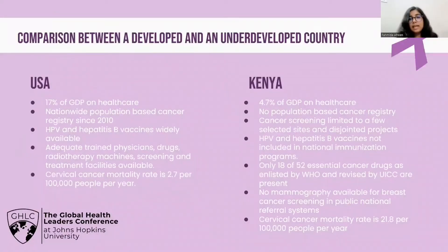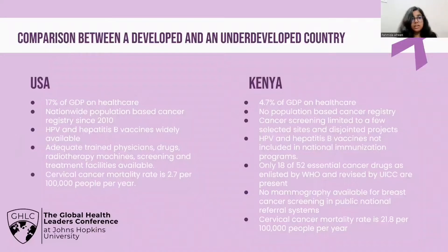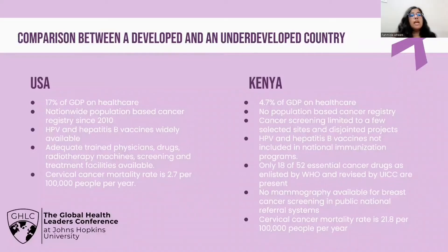Let's compare the USA and Kenya in terms of their cancer care services. The USA spends 17 percent of its GDP on health care. It has had a national population-based cancer registry which contains data about cancer prevalence, mortality, common cancer types, and causes. Vaccines such as the human papillomavirus or HPV vaccine and hepatitis B vaccines are much more widely available in the U.S. and also much emphasized on in the national immunization programs.